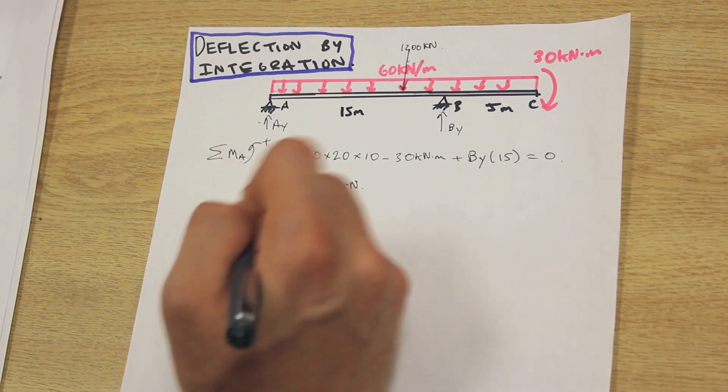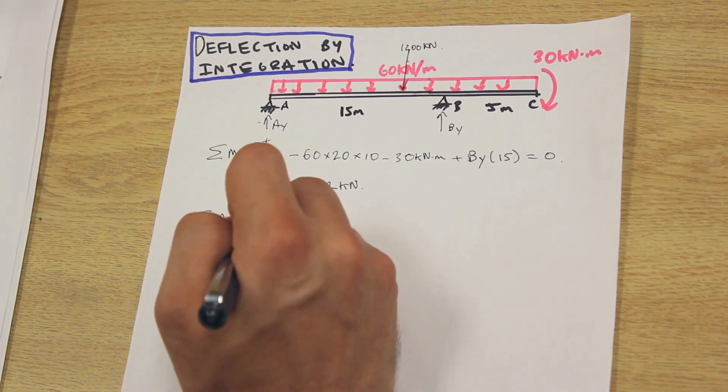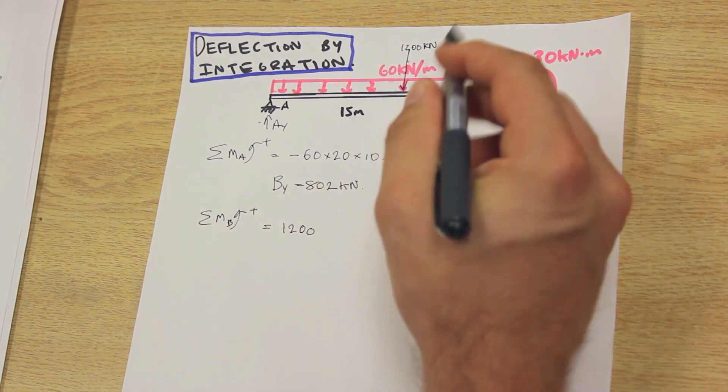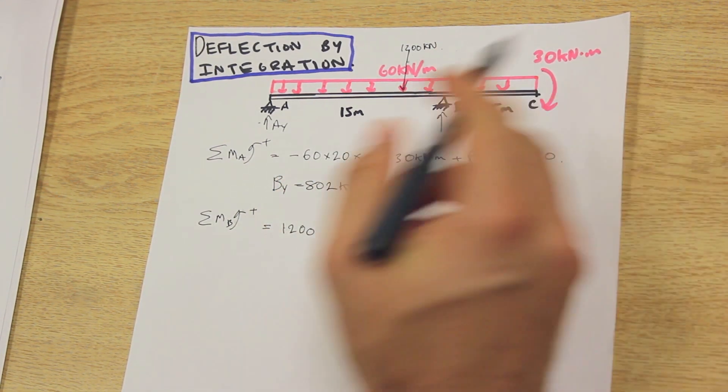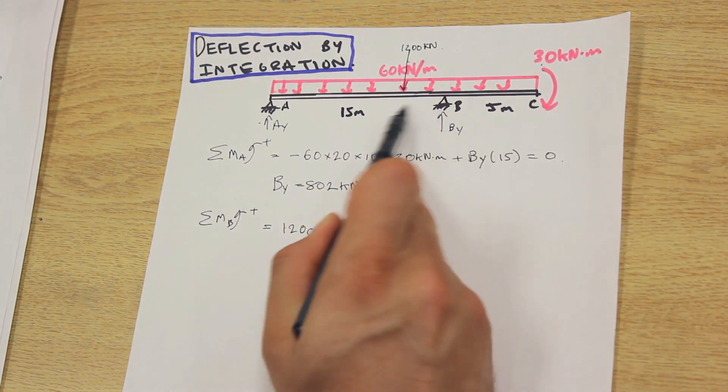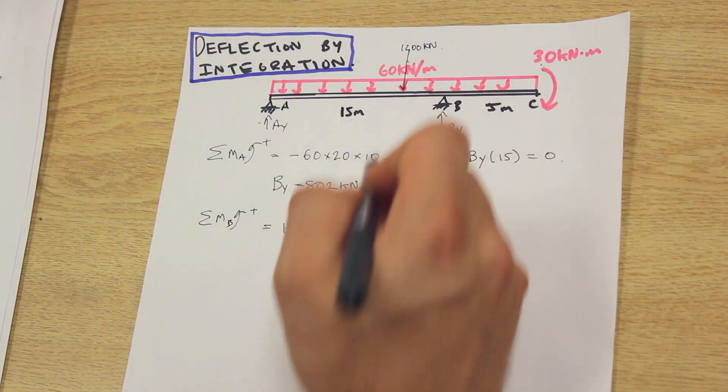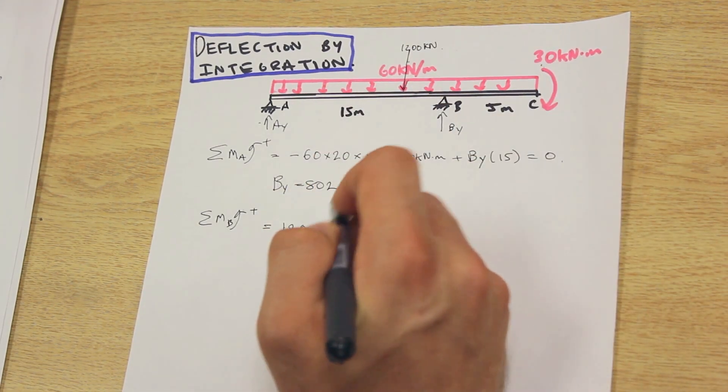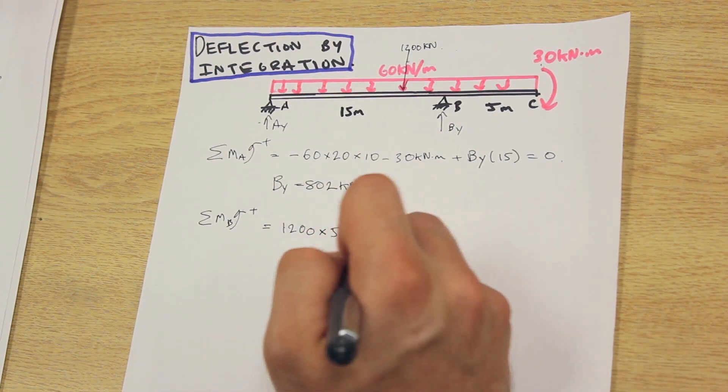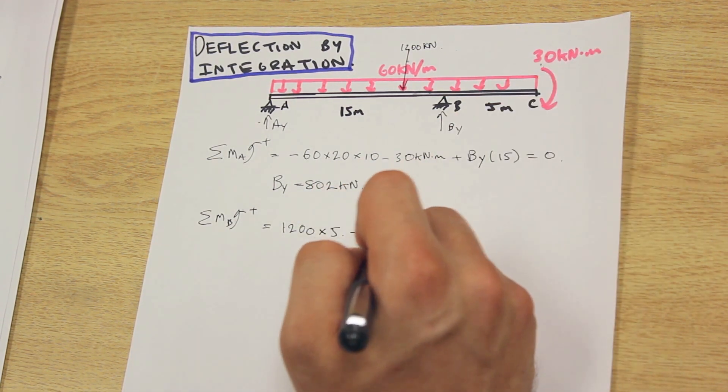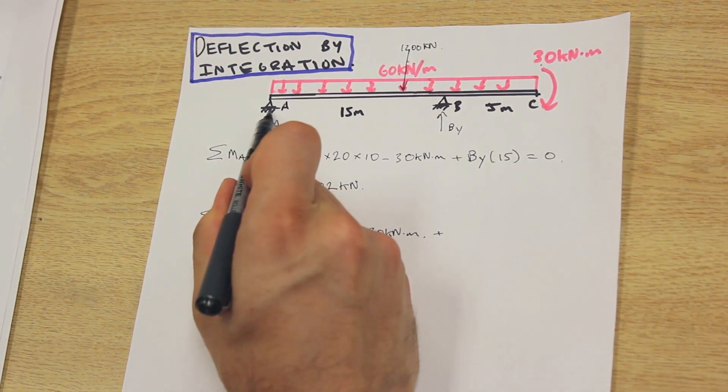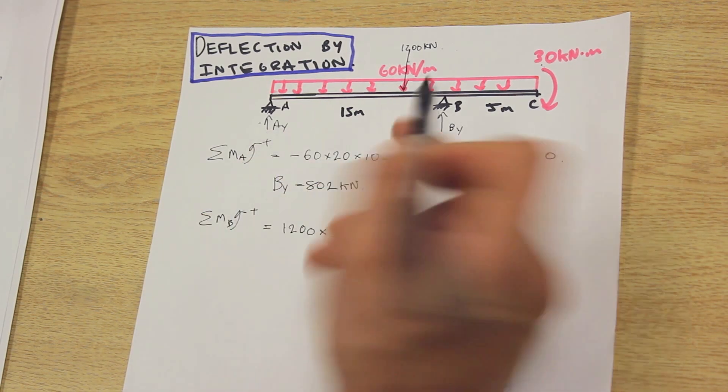Let's do the exact same thing for the moment at B. We have that same 1200 kilonewton force down. This is 10 meters from here to here—it's not to scale, sorry guys—and this is 5 meters, so it's in the positive direction. Next we still have that moment here. Finally, we have our reaction at A times the distance to B, and that equals zero.